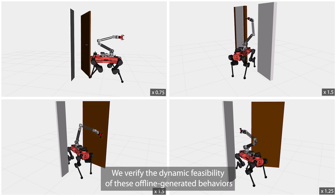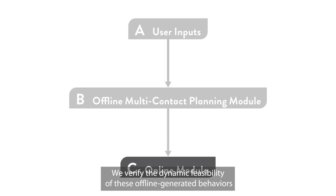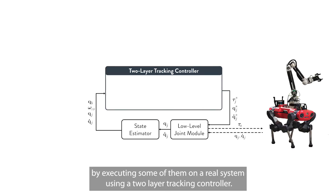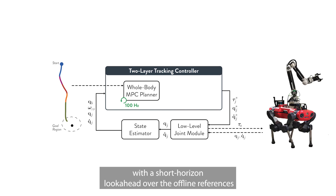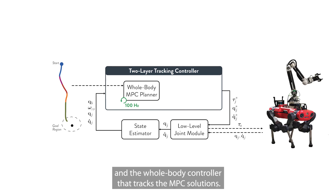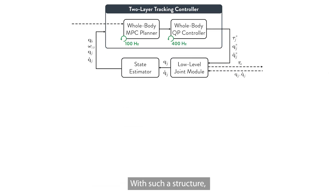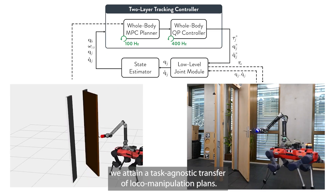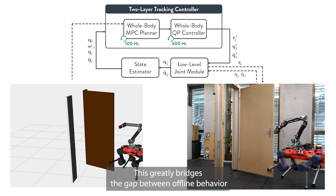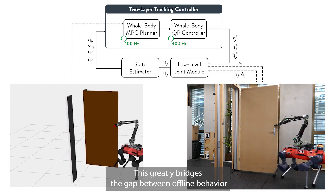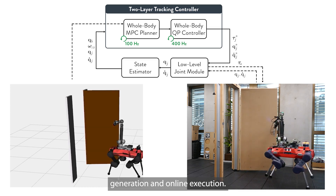We verify the dynamic feasibility of these offline-generated behaviors by executing some of them on a real system using a two-layer tracking controller. It consists of a whole-body model predictive controller with a short horizon look-ahead over the offline references, and a whole-body controller that tracks the MPC solutions. With such a structure, we attain a task-agnostic transfer of local manipulation plans, which greatly bridges the gap between offline behavior generation and online execution.